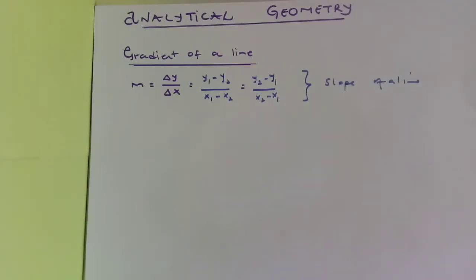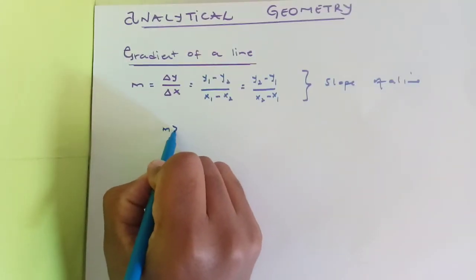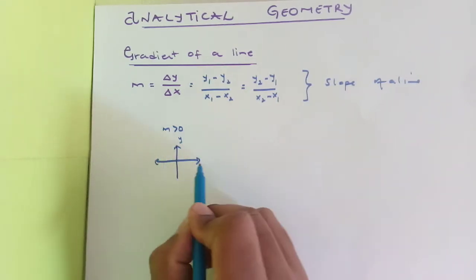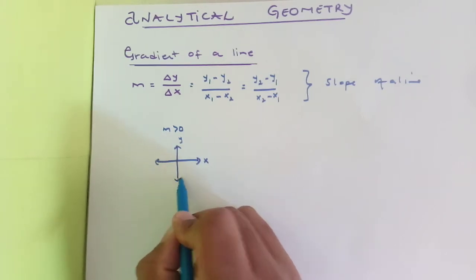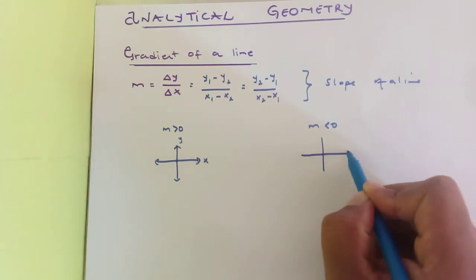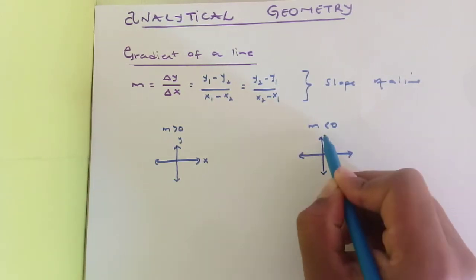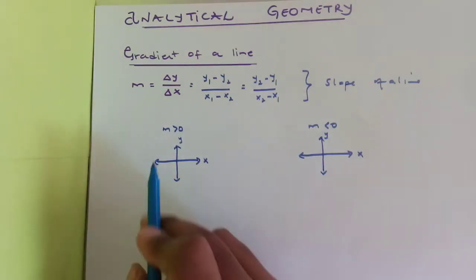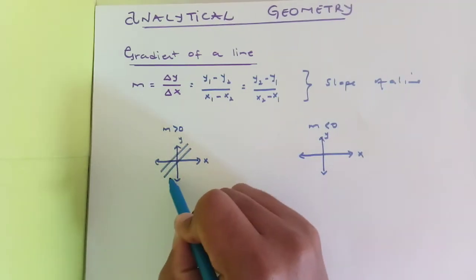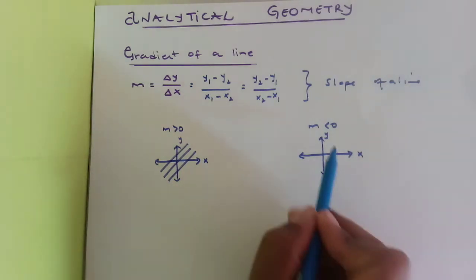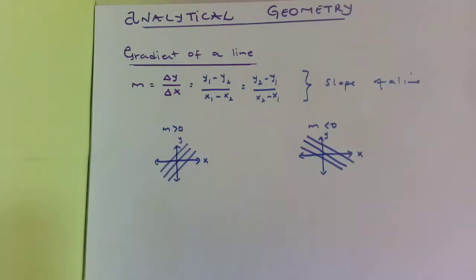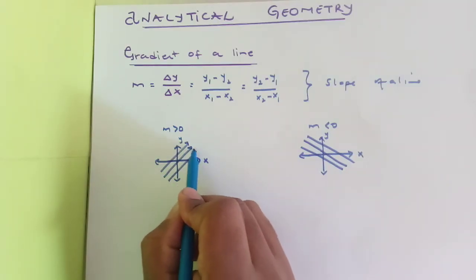Let's consider what a line looks like with a positive gradient versus a negative gradient. With the y-axis and x-axis drawn, if the slope is positive, the line goes upward like this. However, if the slope is negative, the line goes downward like this.